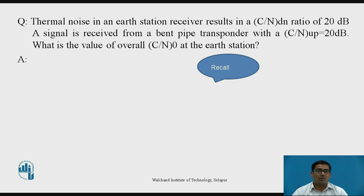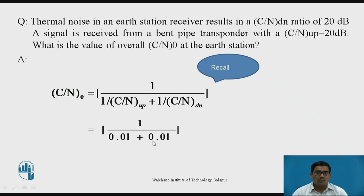Now recall the formula of overall C/N ratio. The formula is (C/N)_0 = 1 / (1/(C/N)_up + 1/(C/N)_down). Put the values and we get 1 / (0.01 + 0.01). Now here C/N in dB is 20. We convert to normalized function and get 100. Then 1/100 = 0.01. And C/N_down is again 20 dB, converted to normalized function is 100. Then 1/100 = 0.01, and solving this we get 50. The overall C/N is 50.